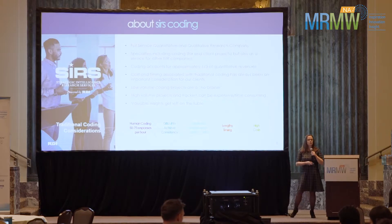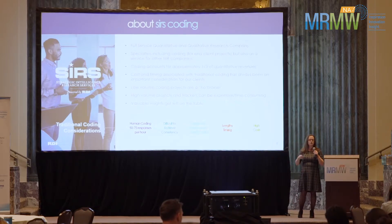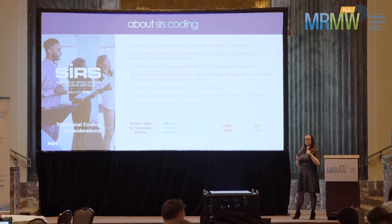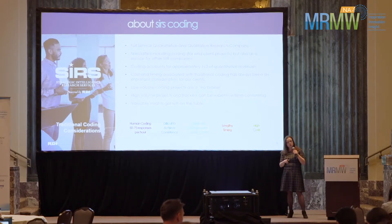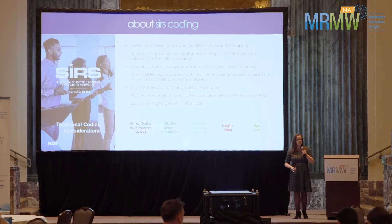Coding is not always consistent. If I have multiple coders working on the same project, a lot of times they'll disagree about how something should be coded. For example, we do a lot of work in food retail, and if a verbatim says 'I went to the store and this product wasn't available,' that could mean the store doesn't carry the product at all, or it could mean there was a spot for it but the product wasn't there. Those are two very different things and we have to distinguish them for our clients.